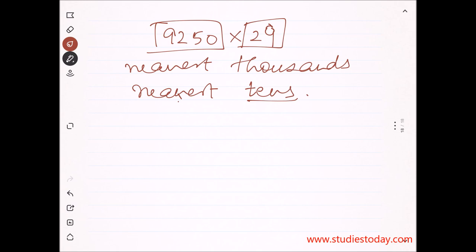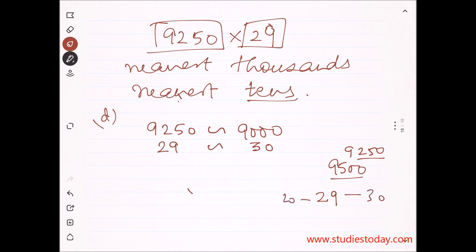This is part D. 9,250 is approximated as 9,000 because it's less than 9,500. And 29 is approximated as 30, because 29 lies between 20 and 30, with center 25, and 29 is greater than 25.